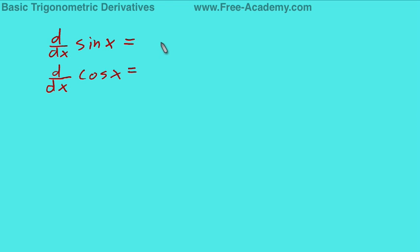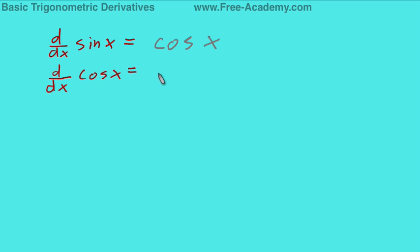The derivative of sine of x equals cosine of x. That's it. If somebody asks you what's the derivative of sine of x, you say cosine of x. They ask you why? Say, I don't know — just is. And the derivative of cosine of x equals negative sine of x.